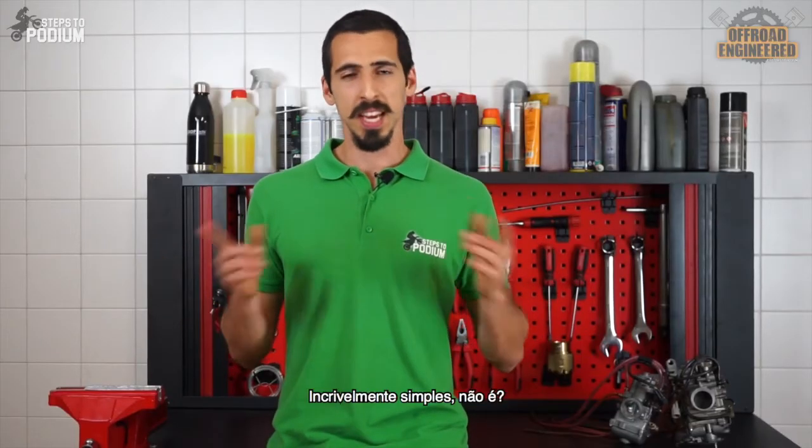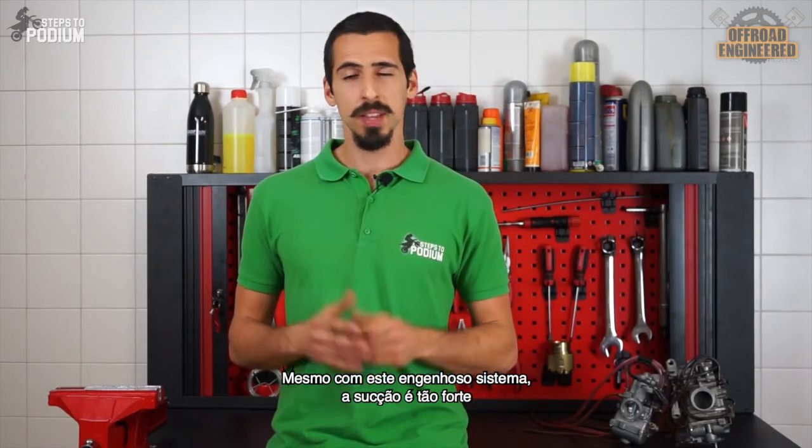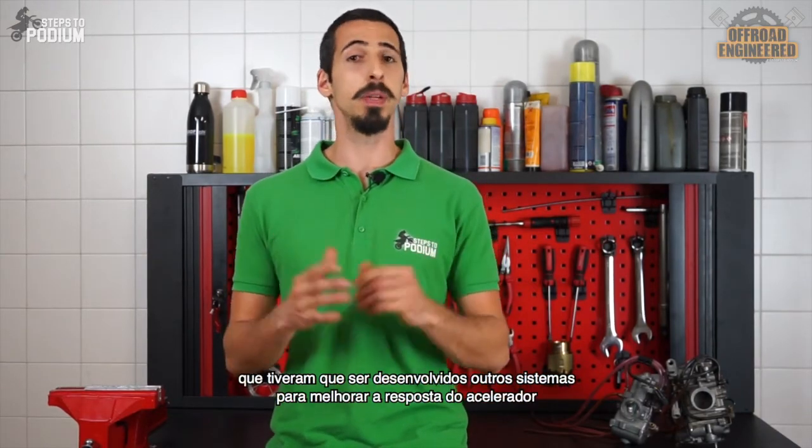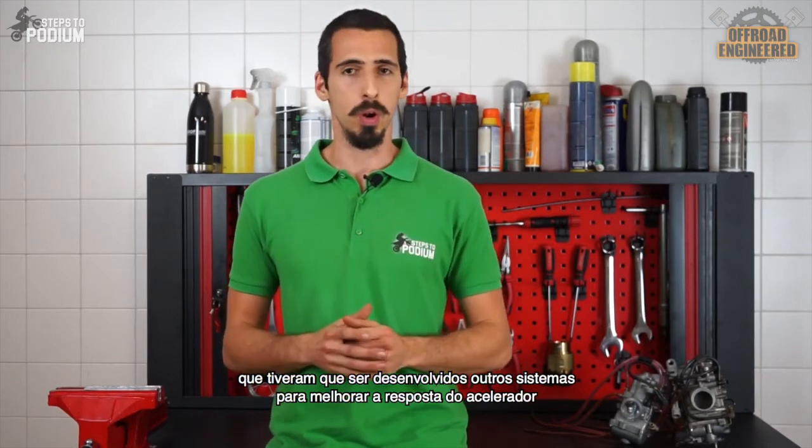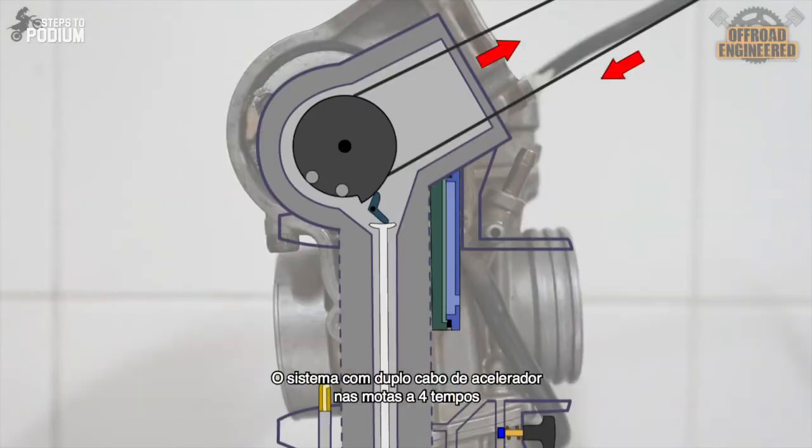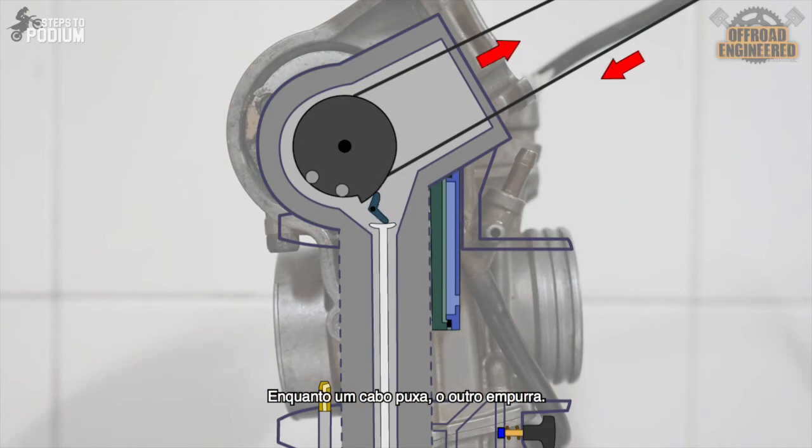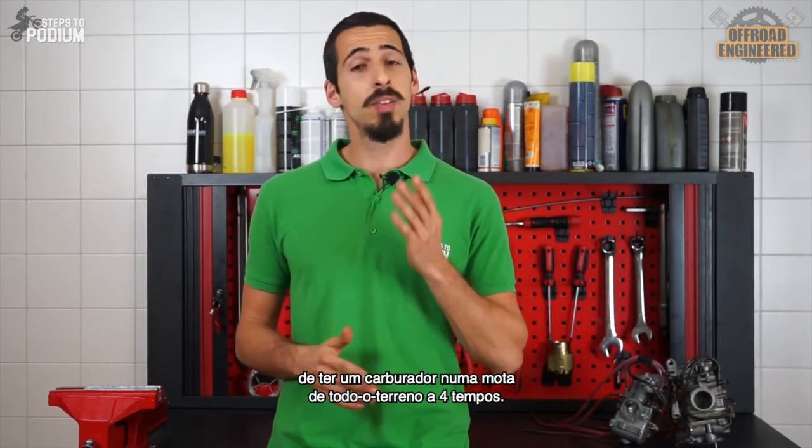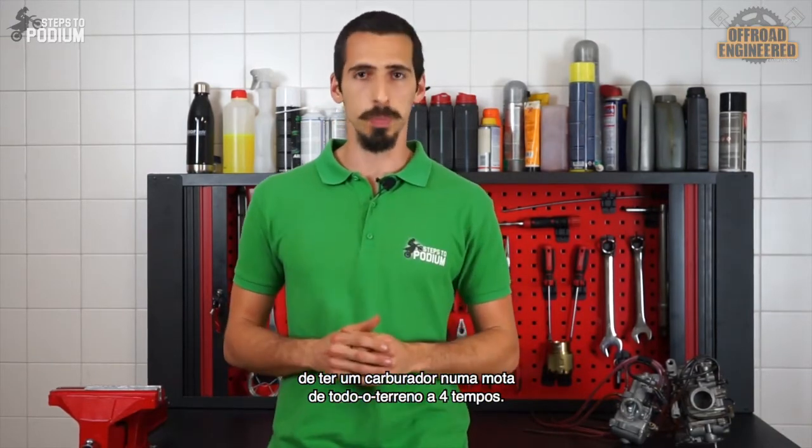Incredibly simple, right? Even with this clever system, the suction created is so strong that other systems have to be developed to further improve throttle response. The double cable throttle system on four-strokes is an extra way to help the slide move more easily on a carb. While one cable is pulling, the other is pushing. However, these features only address the mechanical part of the problem of having a carb in four-stroke dirt bikes.